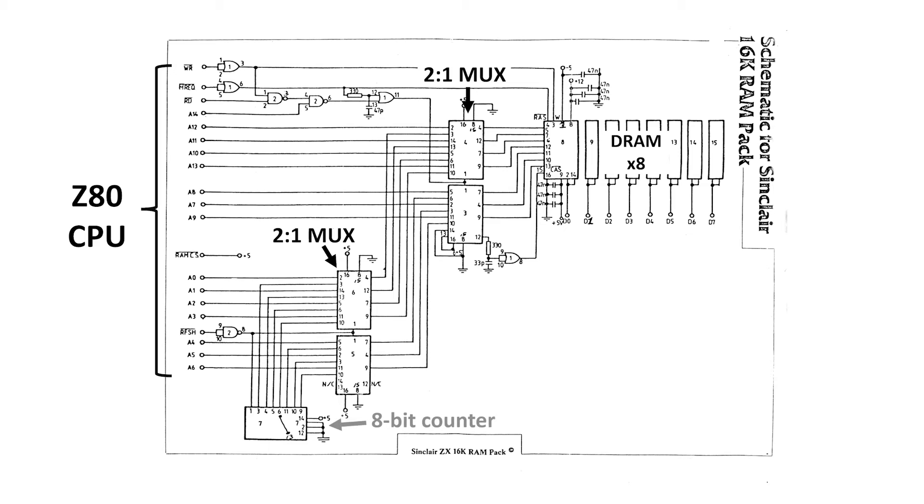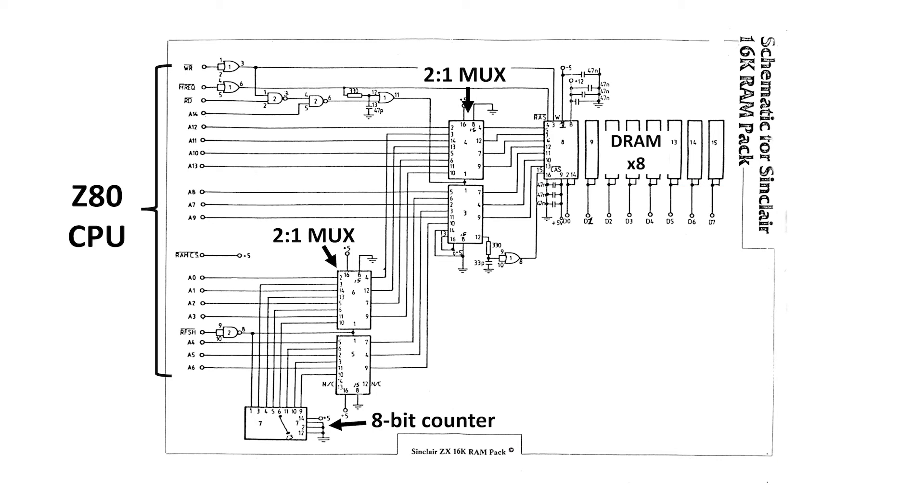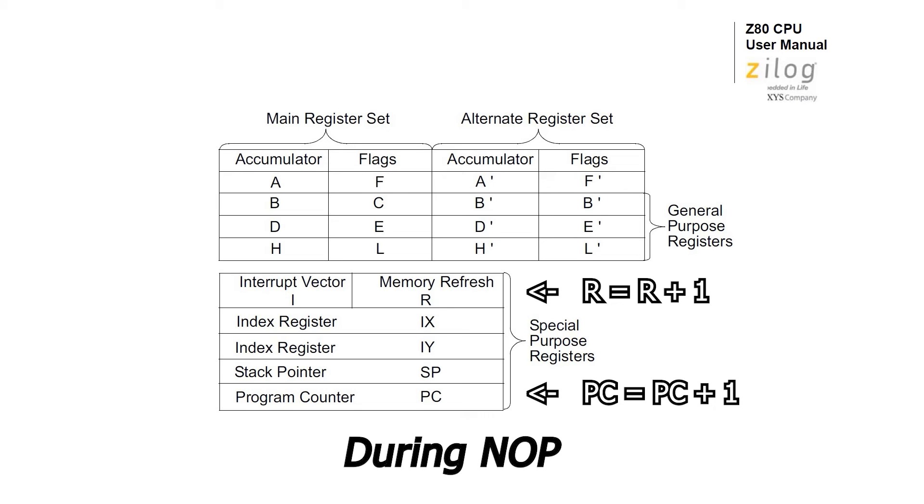Next, we have this 74LS393 dual 4-bit ripple counter, configured as a single 8-bit counter. Now, here's the main trick behind the design. The 74LS393 is acting as an external refresh counter. This does the job that the refresh counter in the Z80 normally does, but can't do it now because it's busy counting characters in the scanline.